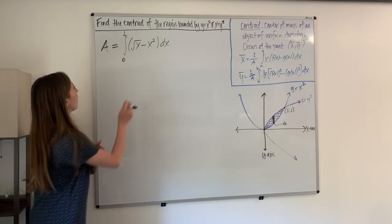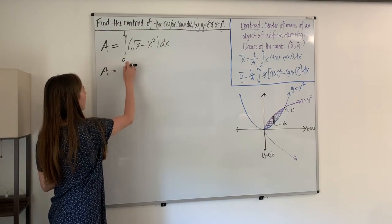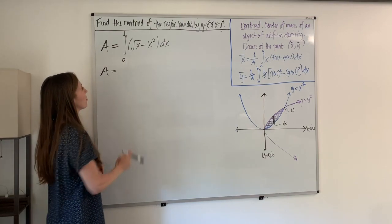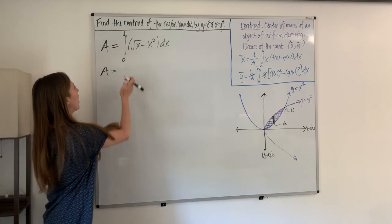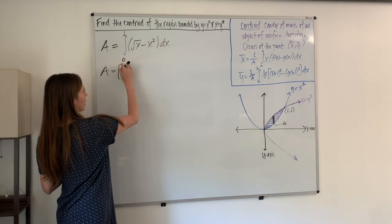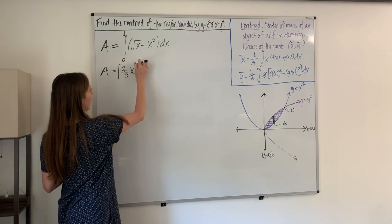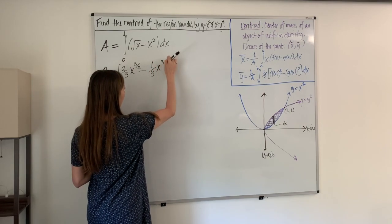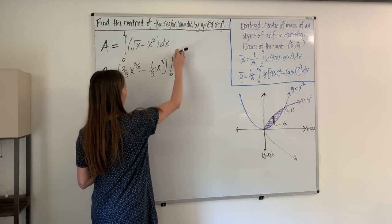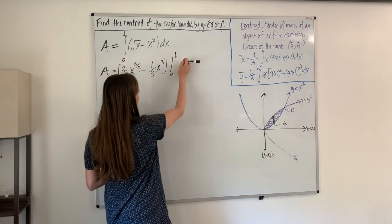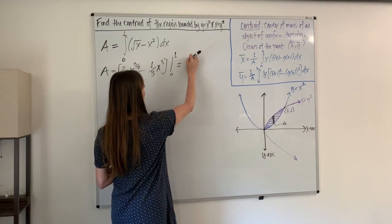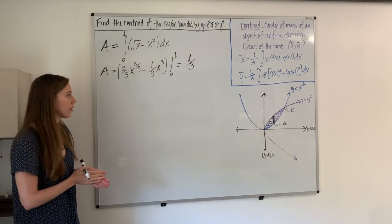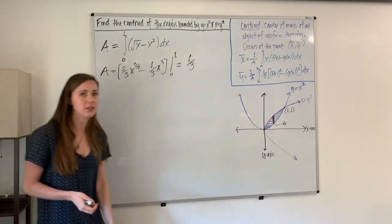Integrating from zero to one, we get two-thirds x to the three-halves minus one-third x cubed, evaluated from zero to one. Plugging in the bounds, we get two-thirds minus one-third, which gives us one-third. So our area is one-third.